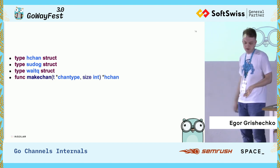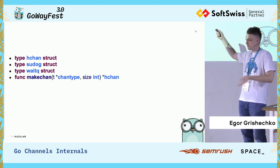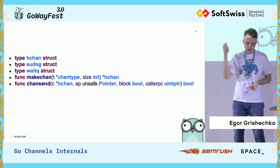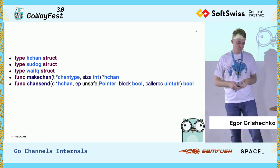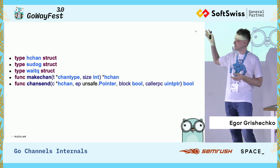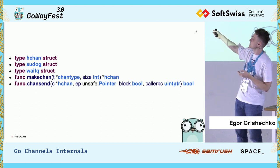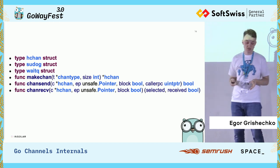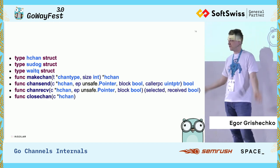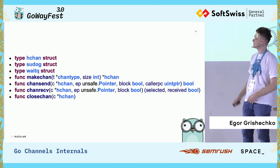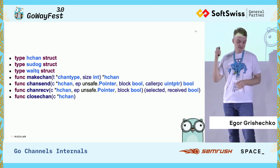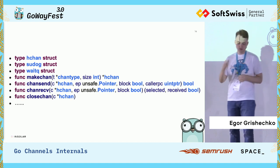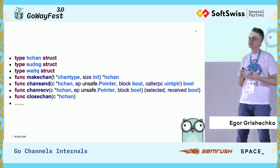There are also a few methods. There's makechan — when you create a channel, you're just calling this function. Channel send — it's obvious: when you're sending something to a channel, you're calling this function. Channel receive is the same situation but for receiving. And there's the close function. There are some additional structs and methods, but we'll take a quick look at them during the talk.